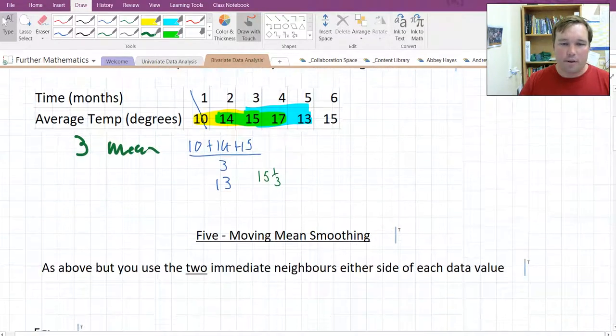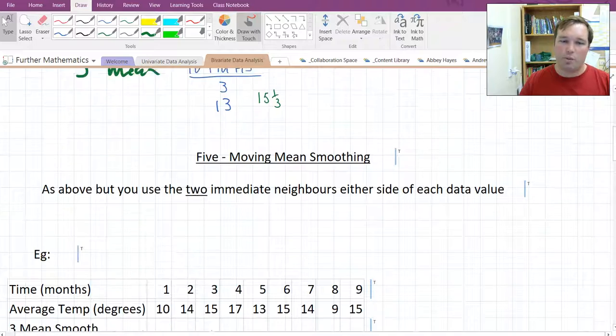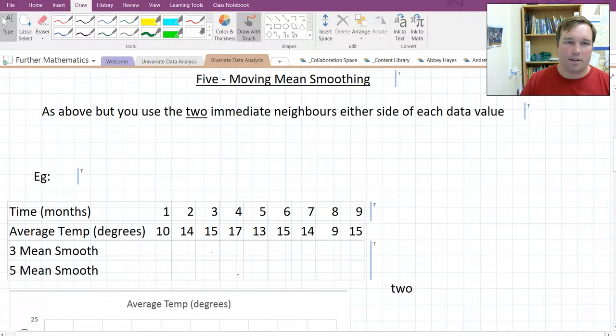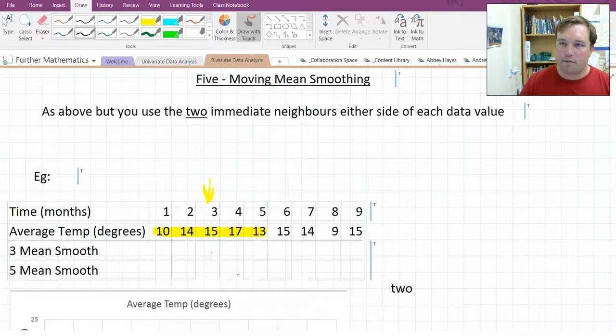Three mean is basic. Five mean you take the two immediate neighbours each side of the data value. So here, we start here, we focus on this one, on the three, and we take the average of those five data points. So if we take the average of those five data points, we add them all together and divide by five, and then we get 13.8.